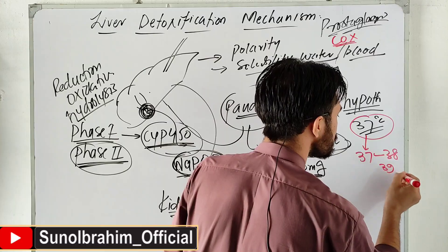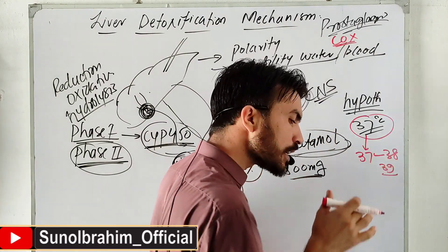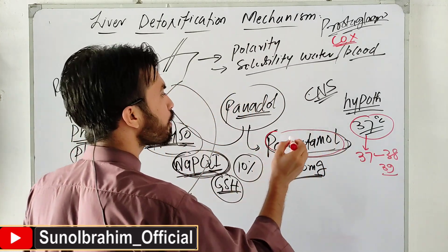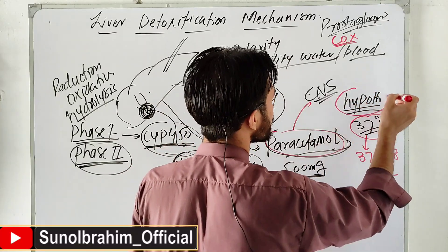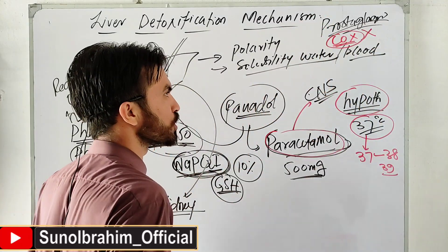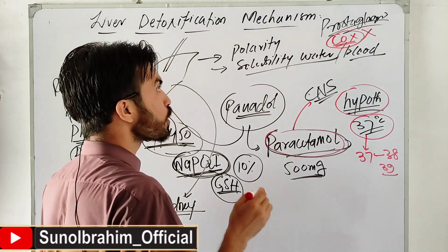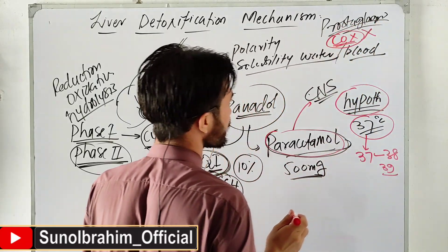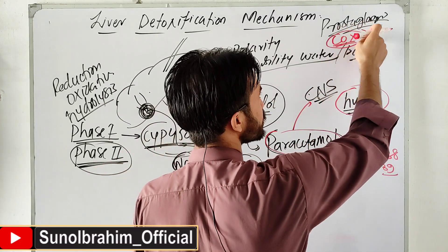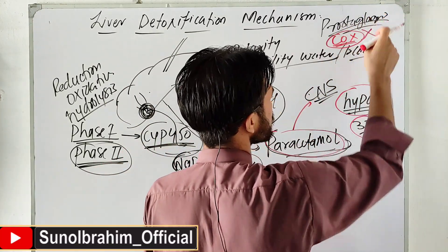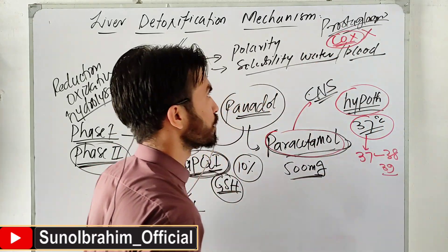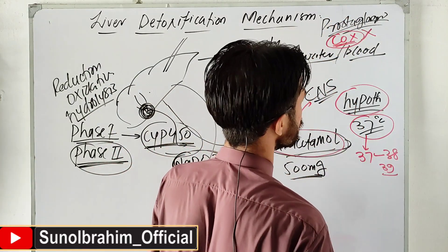At 38-40 degrees body temperature, fever occurs. Paracetamol works in the CNS on hypothalamic neurons - it inhibits COX enzymes. When COX enzymes are inhibited, prostaglandin production stops, and the set point returns to normal - from 38 back down. Paracetamol thus reduces fever by inhibiting prostaglandin synthesis. Prostaglandins are lipid-derived molecules, not proteins.